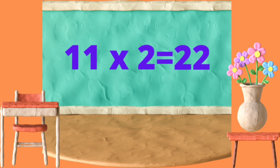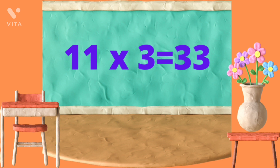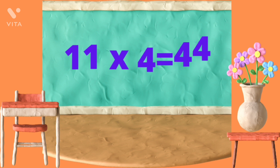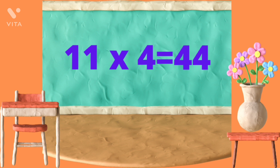11 twos are 22. 11 threes are 33. 11 fours are 44.